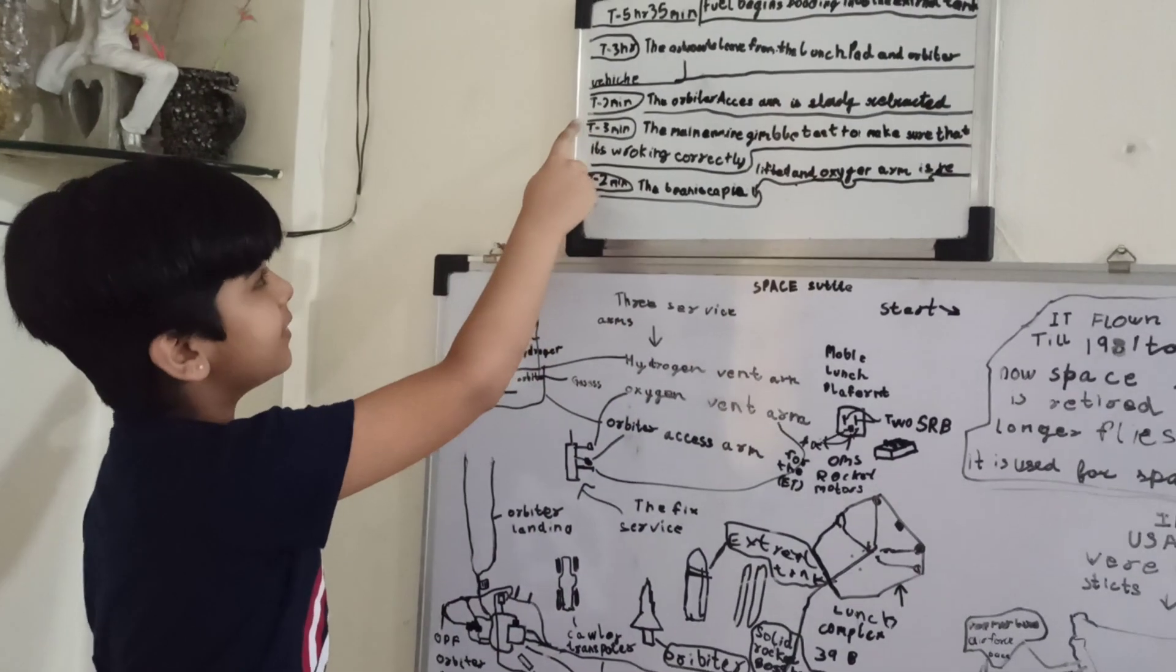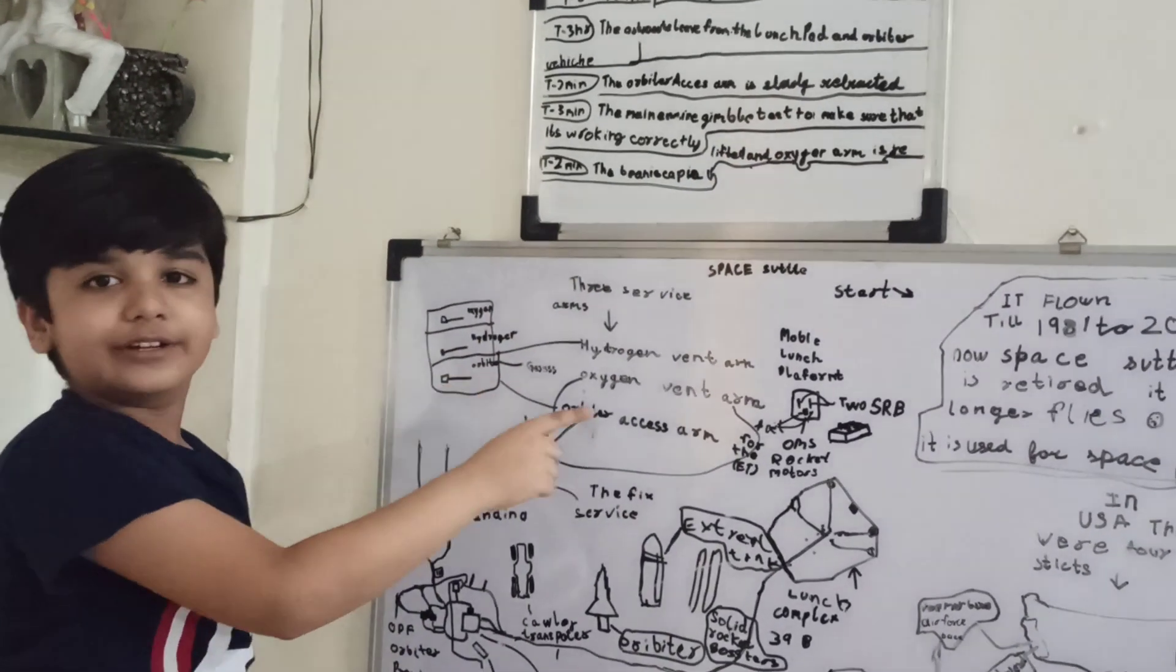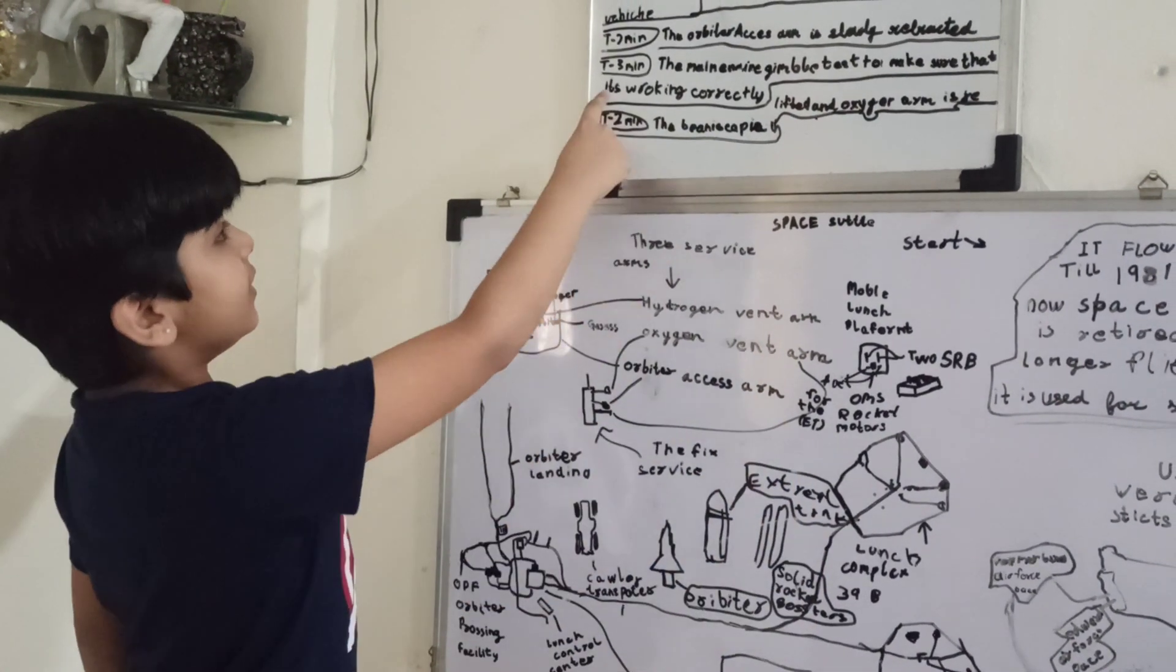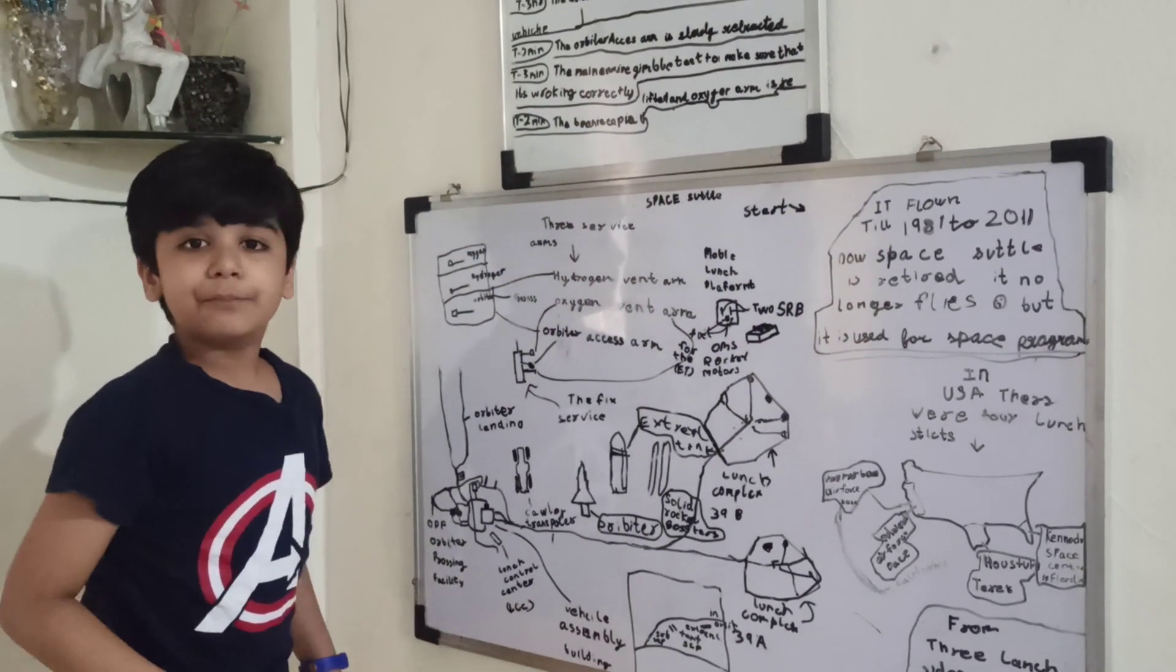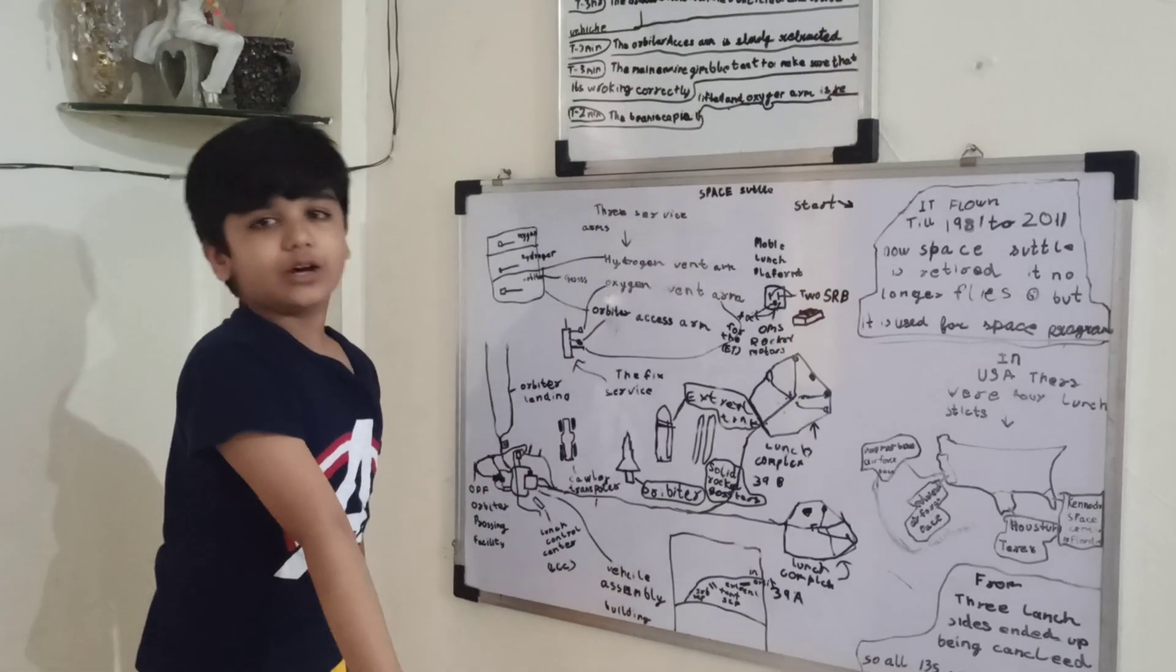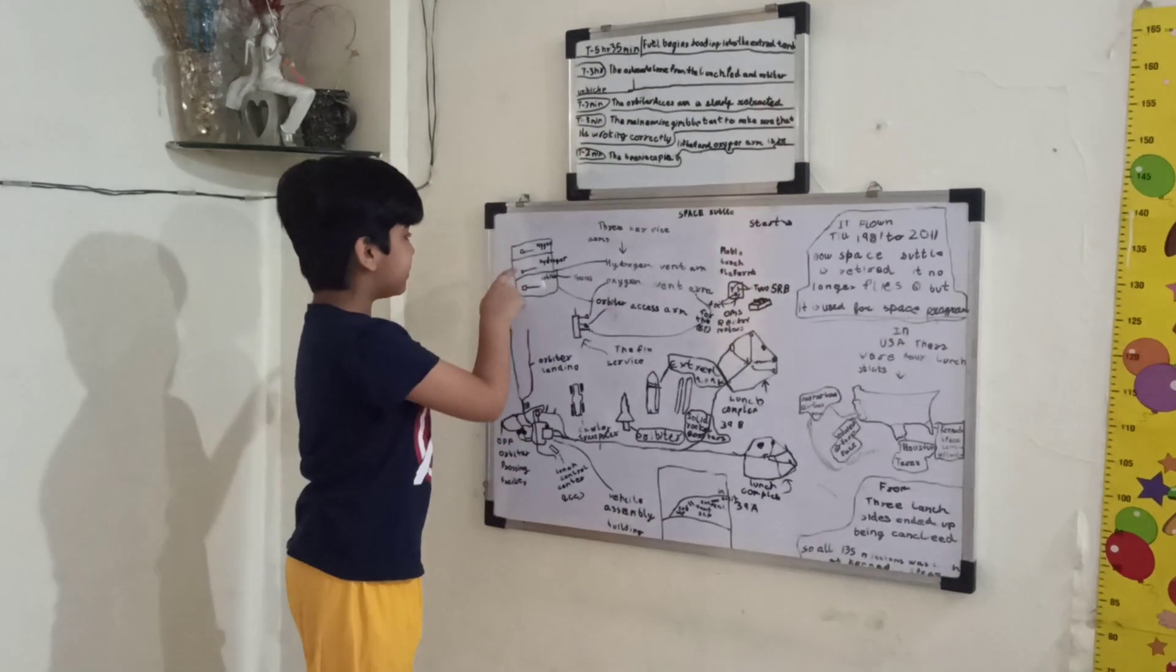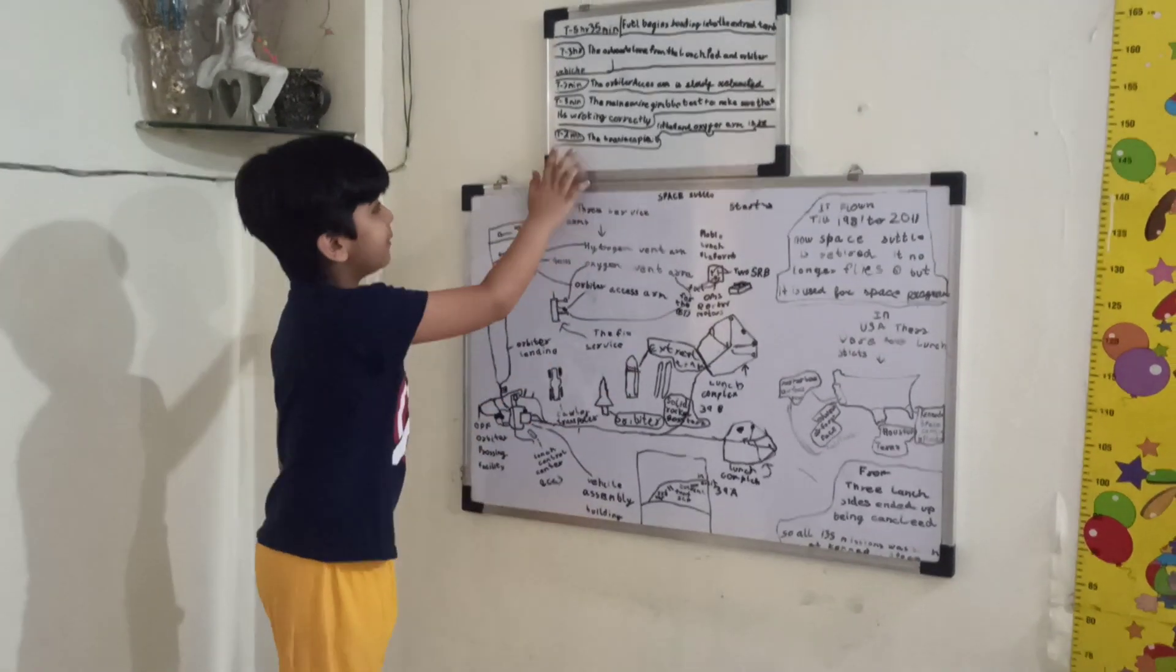At T minus 7 minutes, the orbiter access arm is slowly retracted. When there is an emergency, it will quickly bring it back to the place. T minus 3 minutes, the main engine gimbal checks two times to make sure it is working correctly. Gimbal means it can be tilted up or down. At T minus 2 minutes, the beanie cap is lifted and the oxygen vent is retracted.